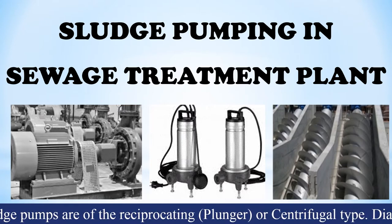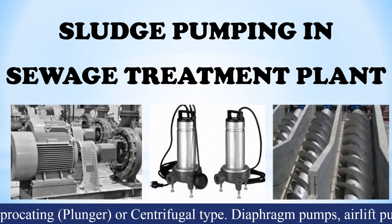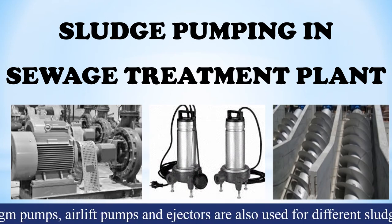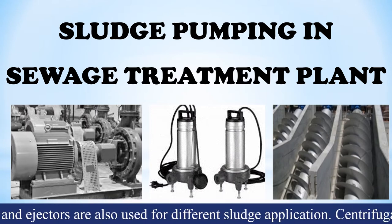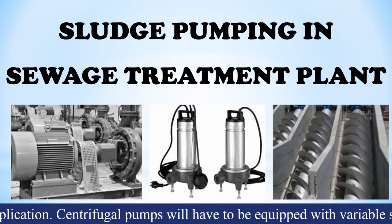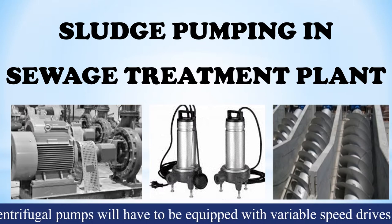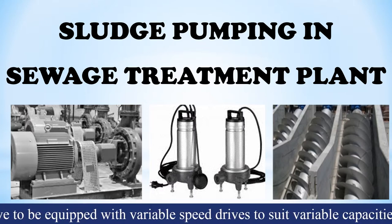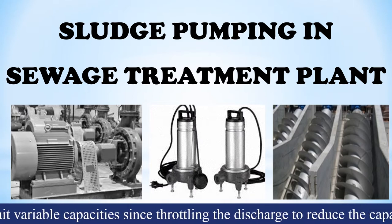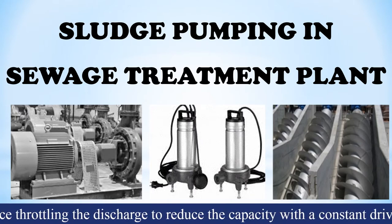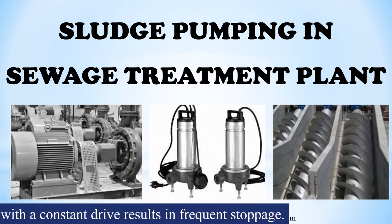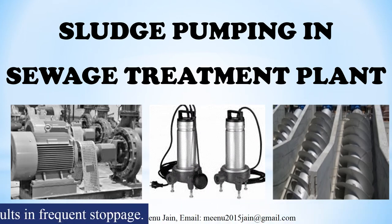Generally, sludge pumps are of reciprocating or centrifugal type. Diaphragm pumps, airlift pumps, and ejectors are also used for different sludge applications. Centrifugal pumps will have to be equipped with variable speed drives to suit variable capacity, since throttling the discharge to reduce the capacity with a constant drive results in frequent stoppage.